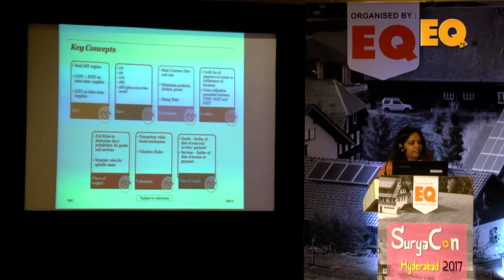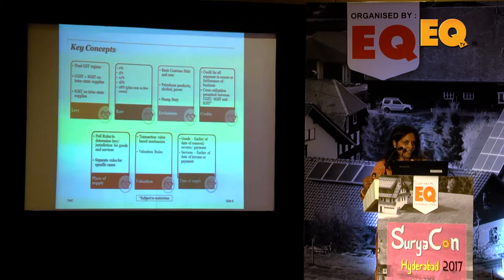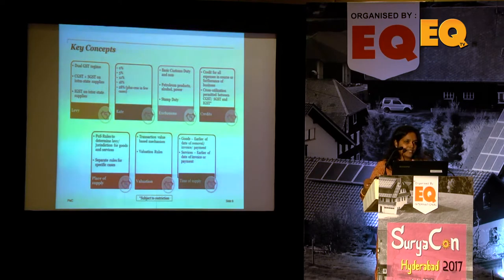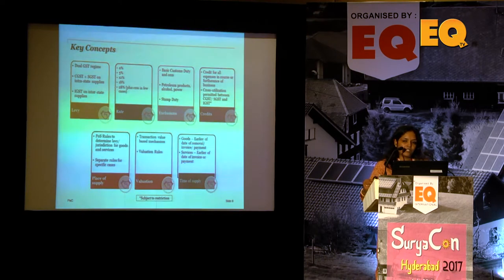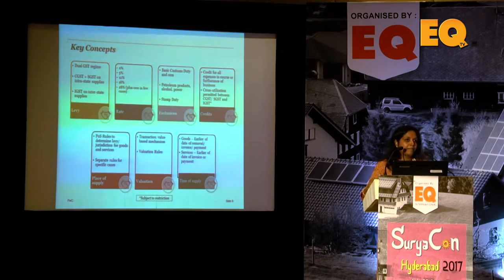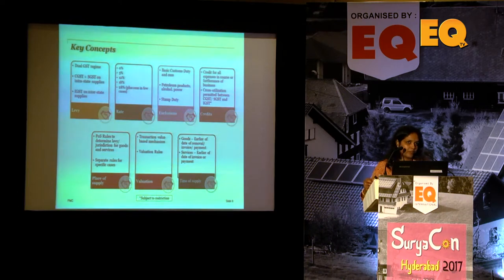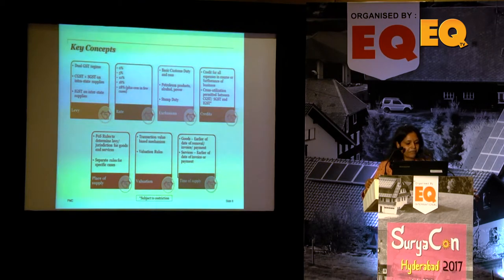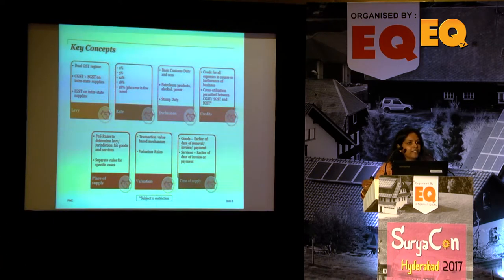There are rules called place of supply rules. Under GST, each state is treated as a separate taxable territory. If we have operations in Telangana and AP, both fall under the same legal entity, but for GST purposes they must be treated as separate entities, and transactions between them are subject to GST. To define which state gets revenue, place of supply rules have been defined.